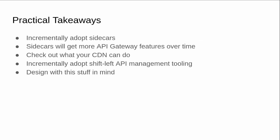For practical takeaways: you can incrementally adopt sidecars — service meshes support incremental rollouts workload by workload. Sidecars will get more API gateway features like advanced WAF stuff over time, so you're not painting yourself into a corner. Check out what your CDN can do — CDNs can be really sophisticated these days and you might find they can do everything left and you really can get rid of the API gateway. The shift-left management tooling can also be incrementally adopted. And even if you're not ready to adopt any of this stuff, you can certainly design with it in mind as a good North Star.